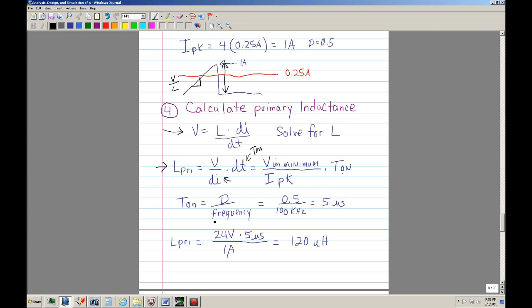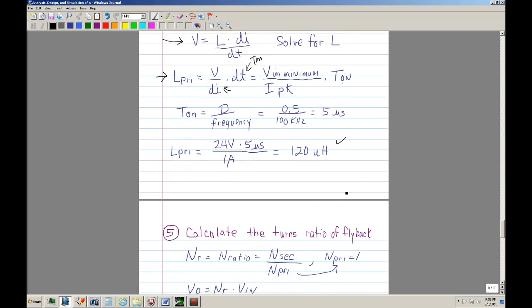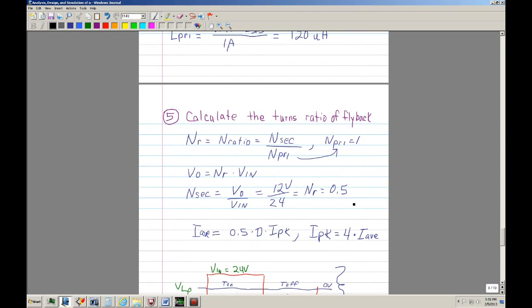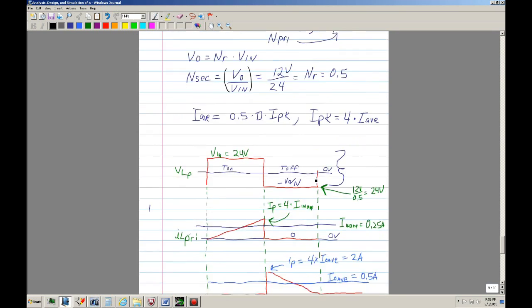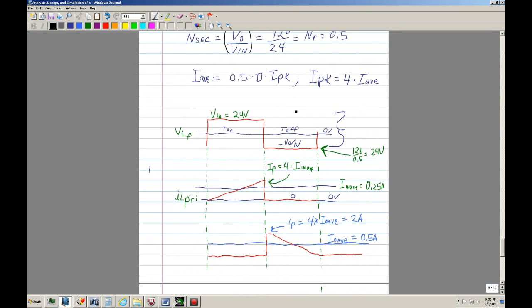This is the di/dt equation that we always use for inductance. We solve for inductance, so we have this equation. We know what the voltage is, 24 volts. Di is the Vp, and we know that the Vp or this delta is 1 amp, and dt is the time on. So we come up with the primary inductance of 120 microhenry. The last part that we did is we calculated the turns ratio, and the turns ratio was pretty simple. It's basically Vout divided by Vin, so we have a turns ratio of 0.5.